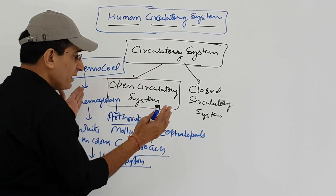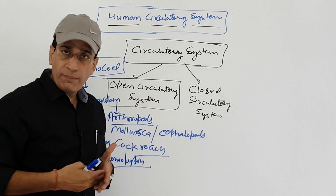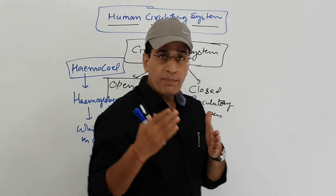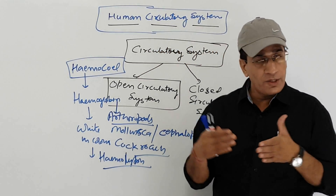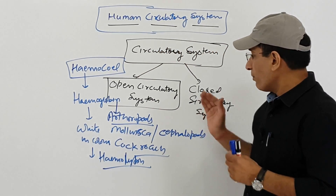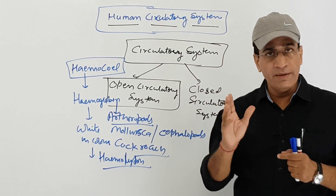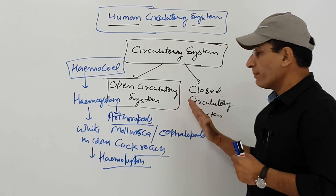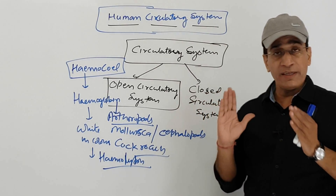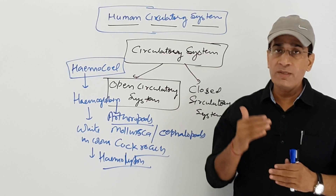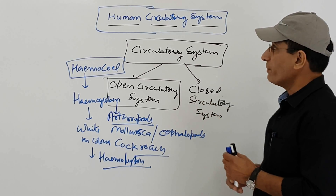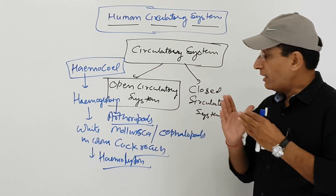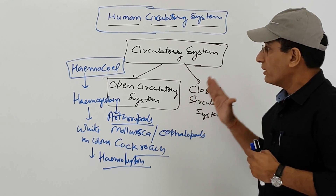In the open circulatory system, blood is in direct contact with the tissues of the body. The second type is the closed circulatory system. In this system blood does not contact the tissue directly; it flows in arteries, veins, and the heart. In human beings, the closed circulatory system is present — particularly the double closed circulatory system. All higher vertebrates and the octopus also conduct the closed circulatory system.